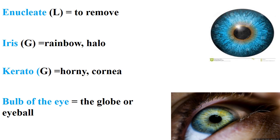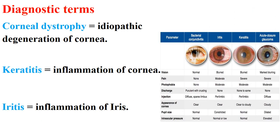Also the term 'iris' means a rainbow or halo. The term 'kerato' refers to the cornea. The pupil of the eye is called the uvea or eye bulb.